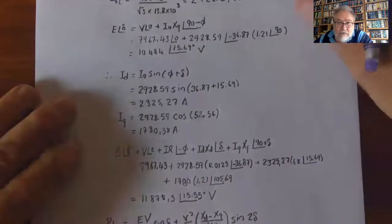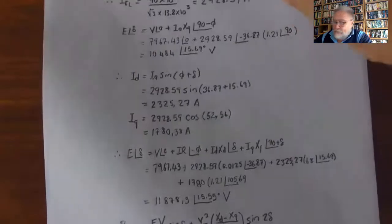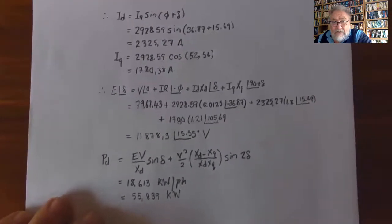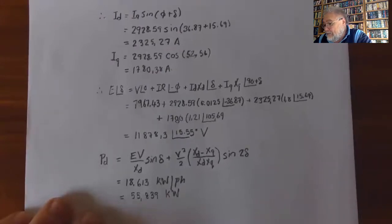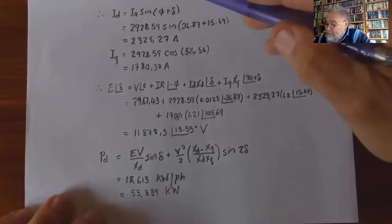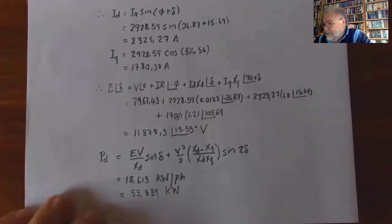Now calculate the induced EMF: E = V + Ir∠(−φ) + Id·Xd∠δ + Iq·Xq∠(90 + δ). Adding them together gives 11,878 V at an angle of 15.55°, which is essentially the same angle as calculated at the start — confirming the calculation is correct.